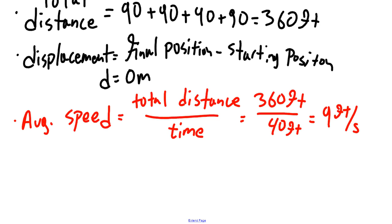So that means, on average, the baseball player was moving 9 feet every second as he ran around the bases, taking his glory.